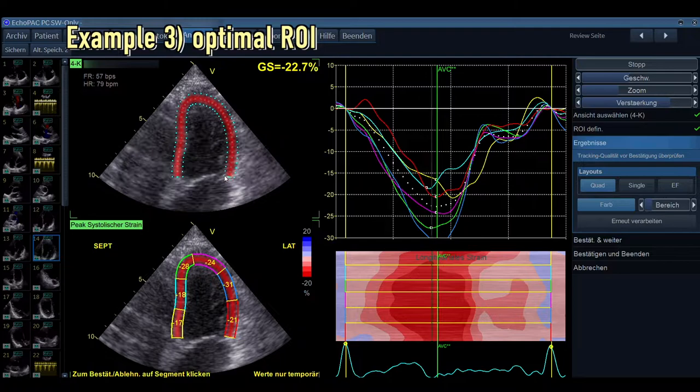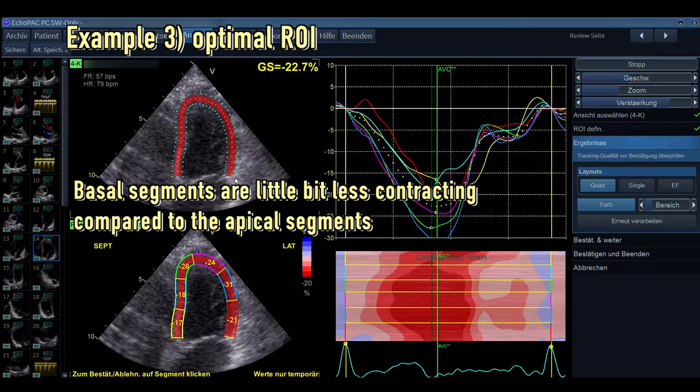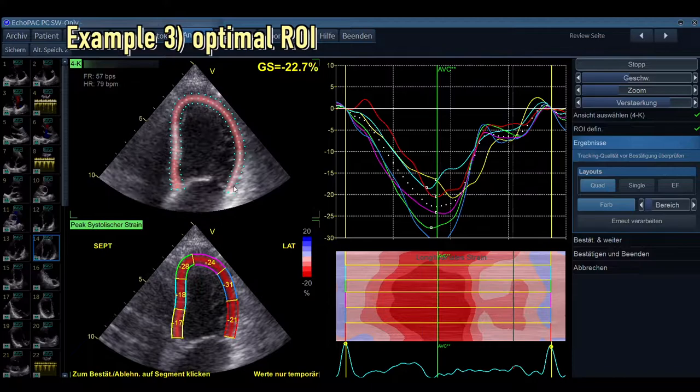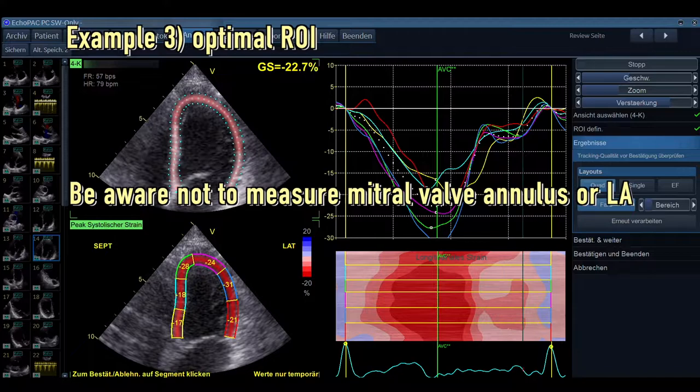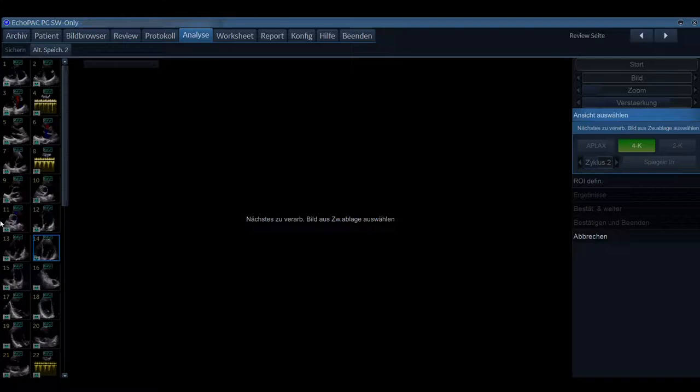Why is that? Always the basal segments are a little bit less contracting compared to the apical segments. But if you just put it more down, you are tracking the mitral valve annulus, which is just firmer tissue compared to the myocardium. So you have to be aware to not measure the mitral valve annulus or the left atrium even in this view. So we also take this measurement so we can continue with our next measurement and apical three-chamber view to succeed in all the measurements.